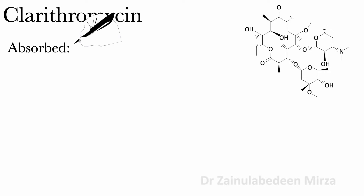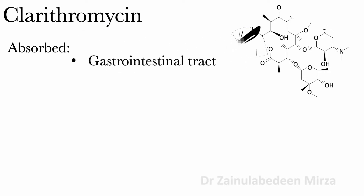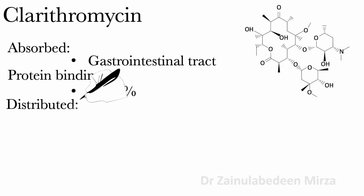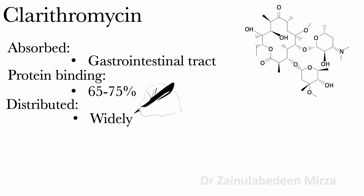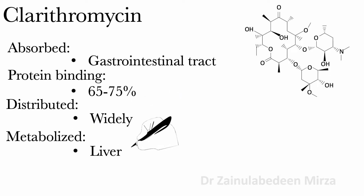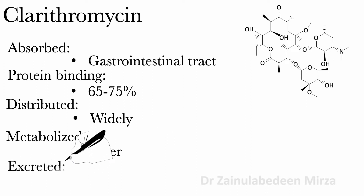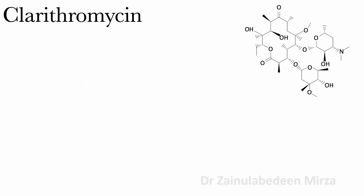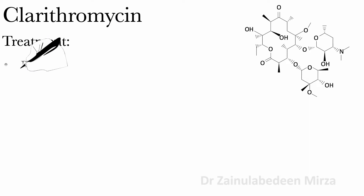Clarithromycin is well absorbed from the gastrointestinal tract. Protein binding of clarithromycin is about 65 to 75 percent and it is widely distributed. Clarithromycin is metabolized in the liver and excreted in urine.